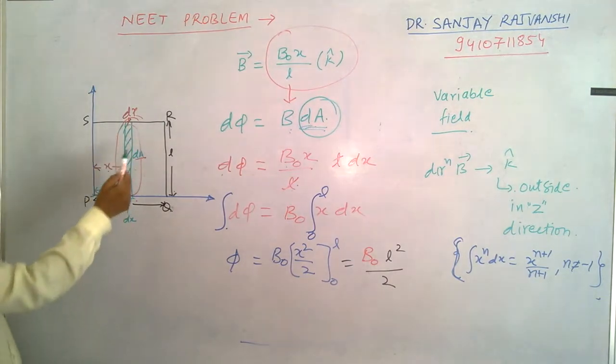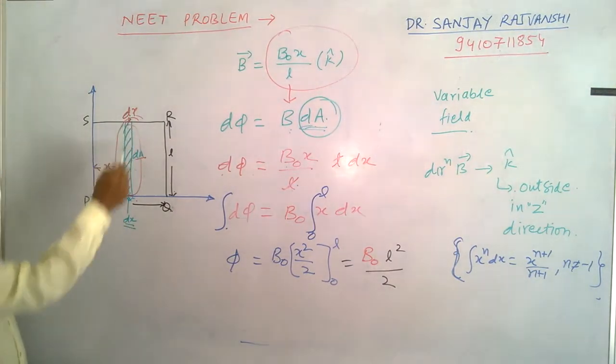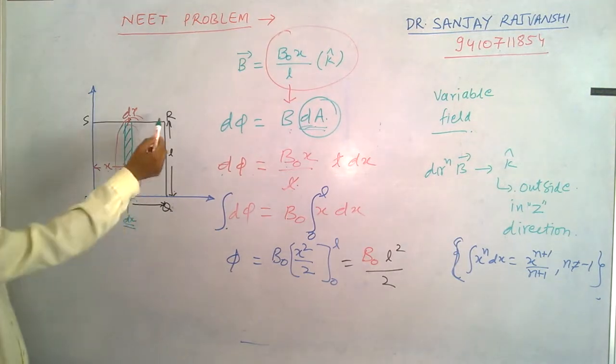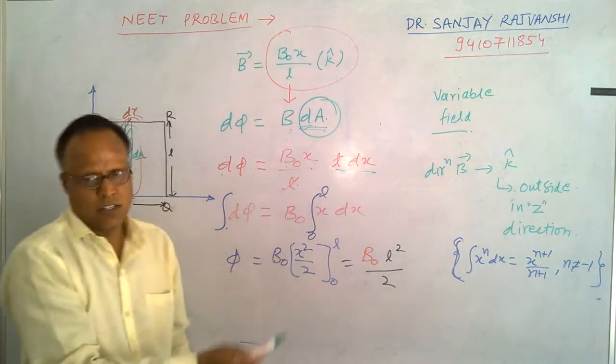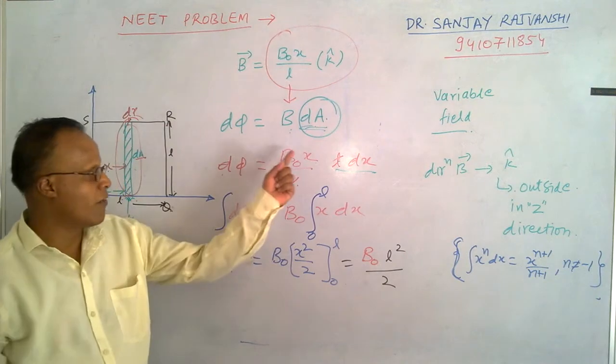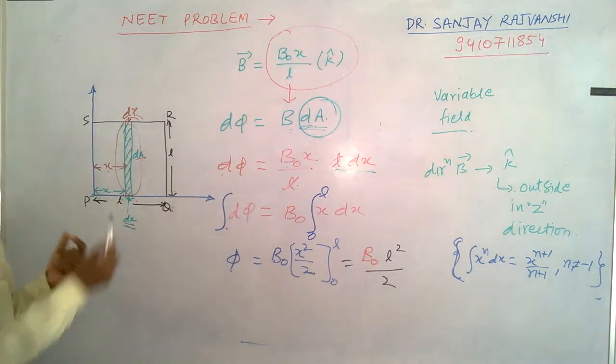Length is here dx, or you can say breadth is dx, length is L. So this L into dx, vice versa you can say. So area dA is L dx. So L to L cancel. Finally you get B naught x dx is your d phi.